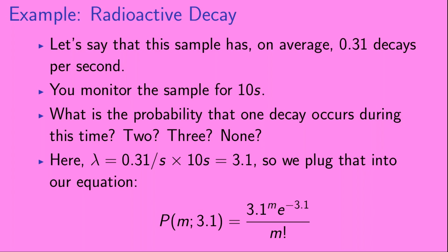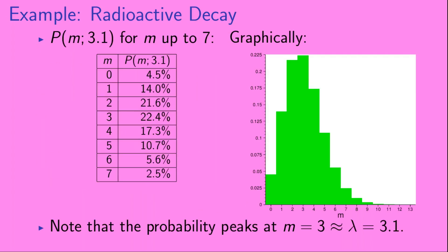Here, λ = 0.31 decays per second × 10 seconds = 3.1. We plug that into our equation to get the Poisson probability of m decays given λ = 3.1. Here we've made a table of the Poisson probability for m = 0 to 7, and we've also plotted it for m = 0 to 13. Note that the probability peaks at m = 3, which is very close to λ = 3.1.